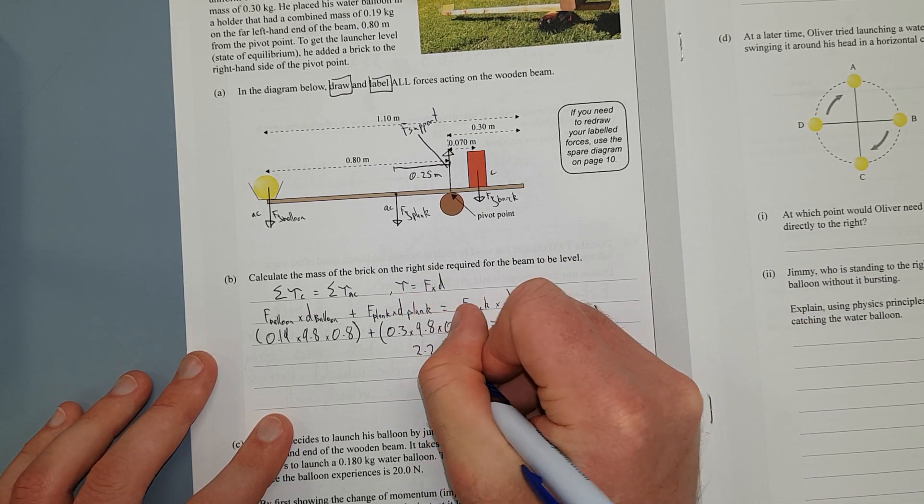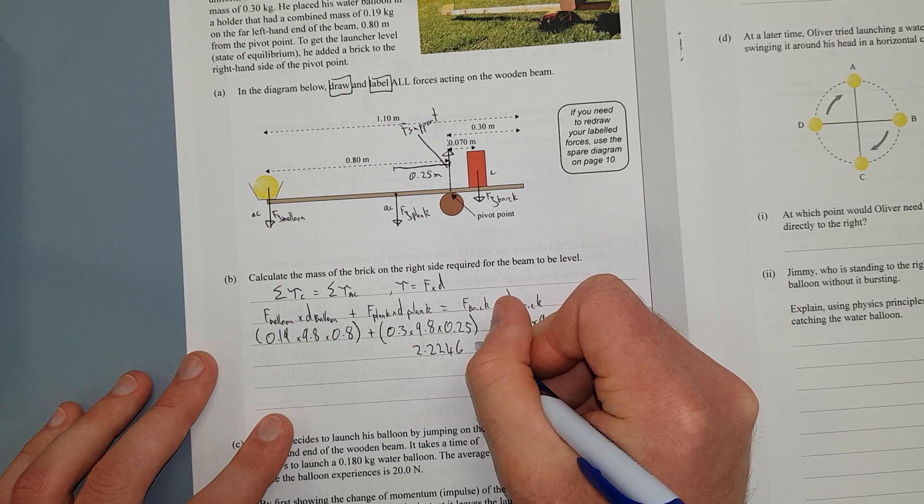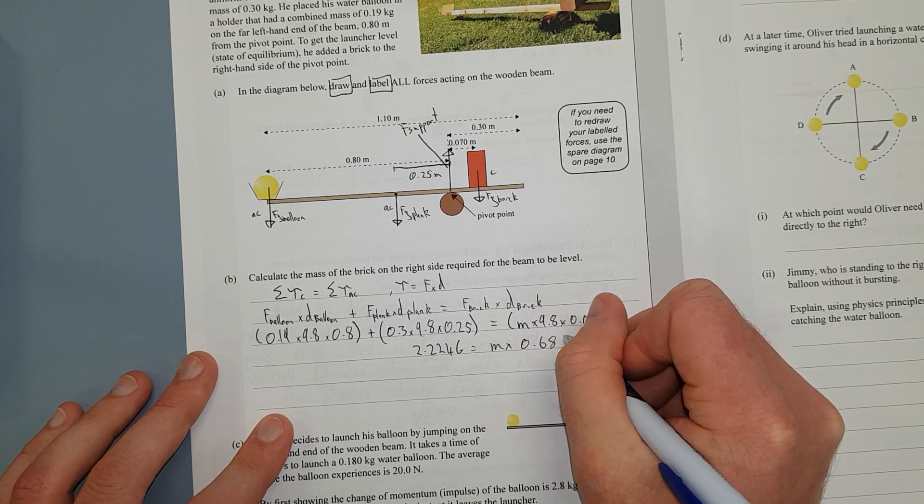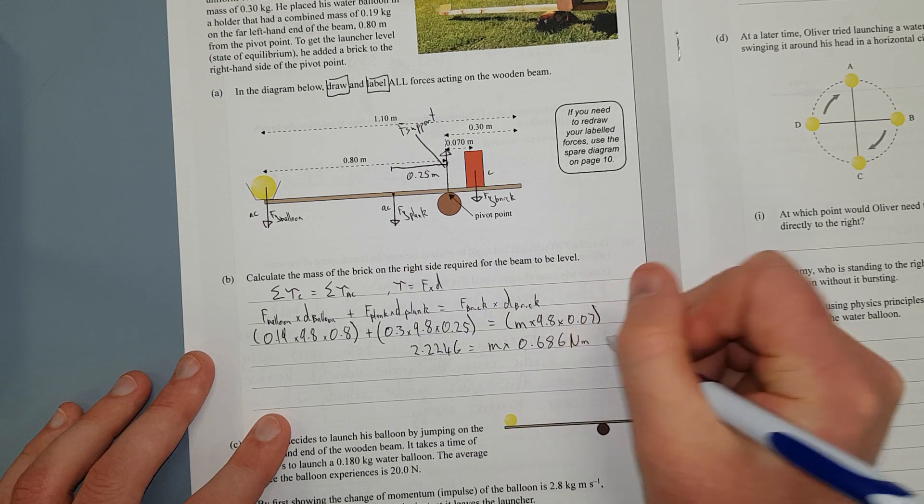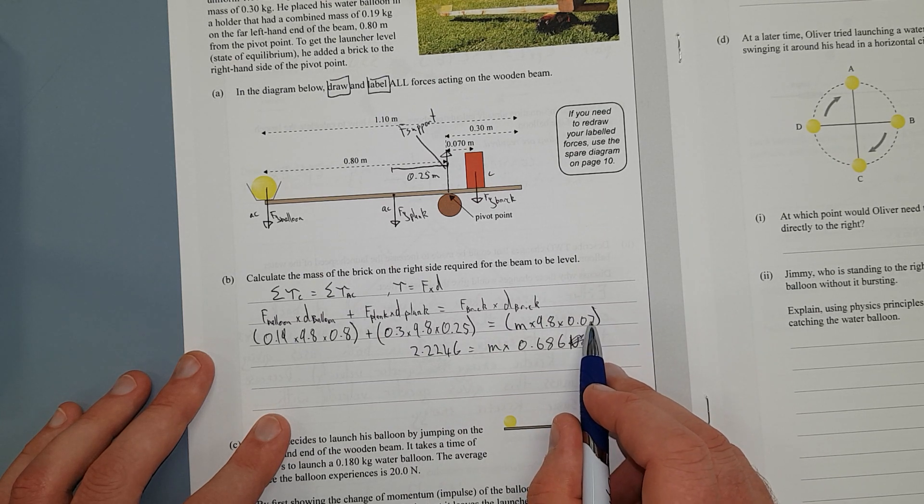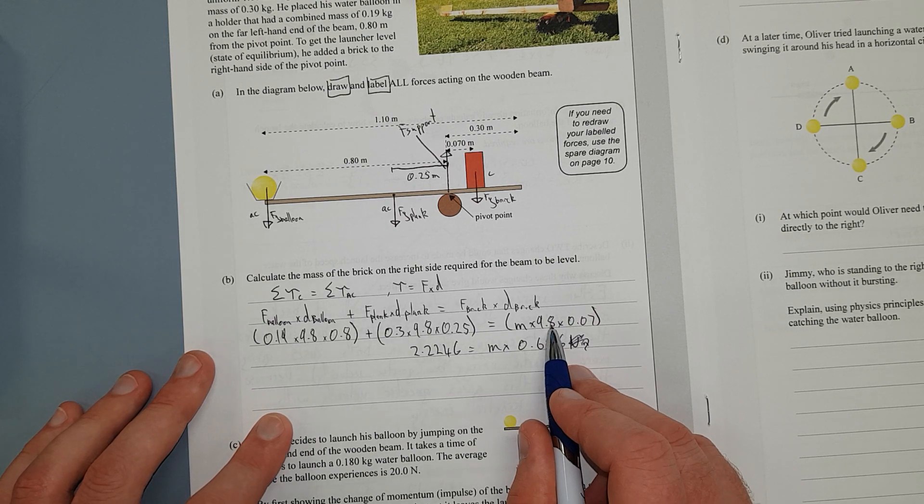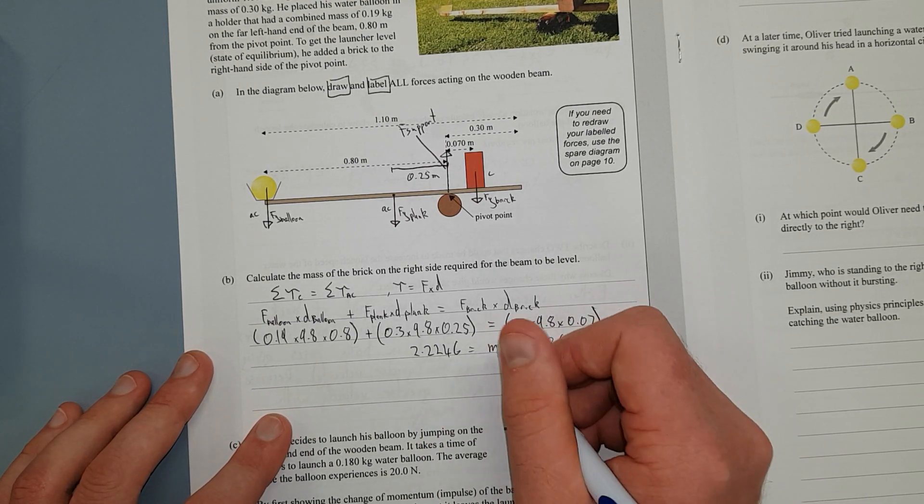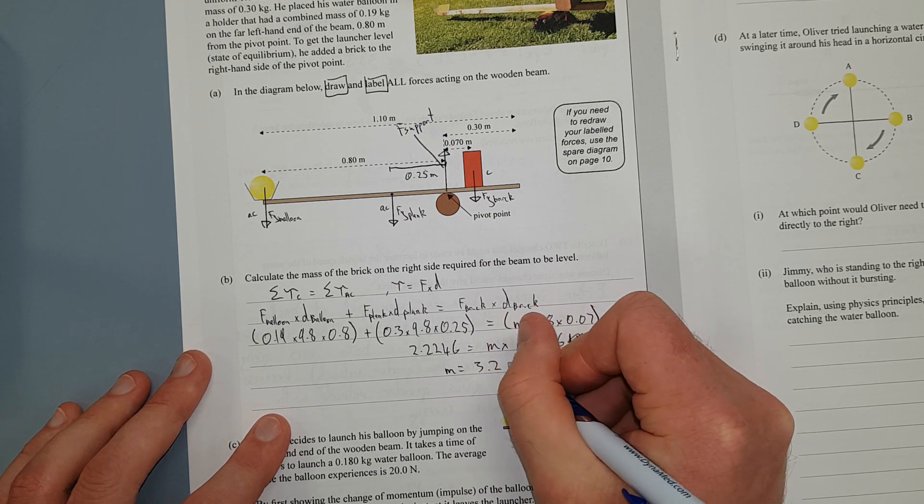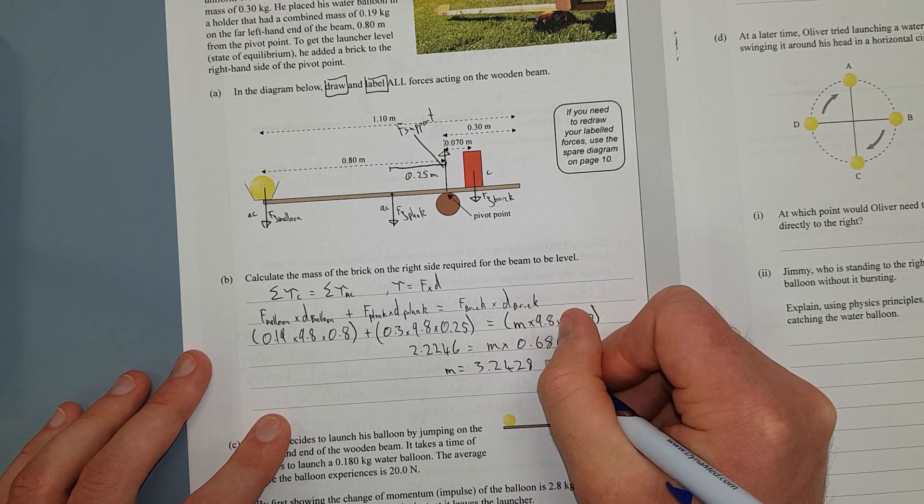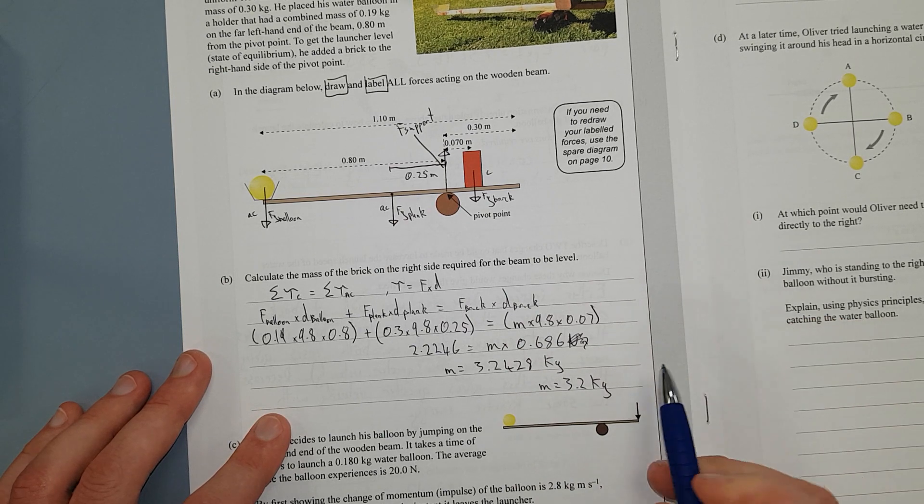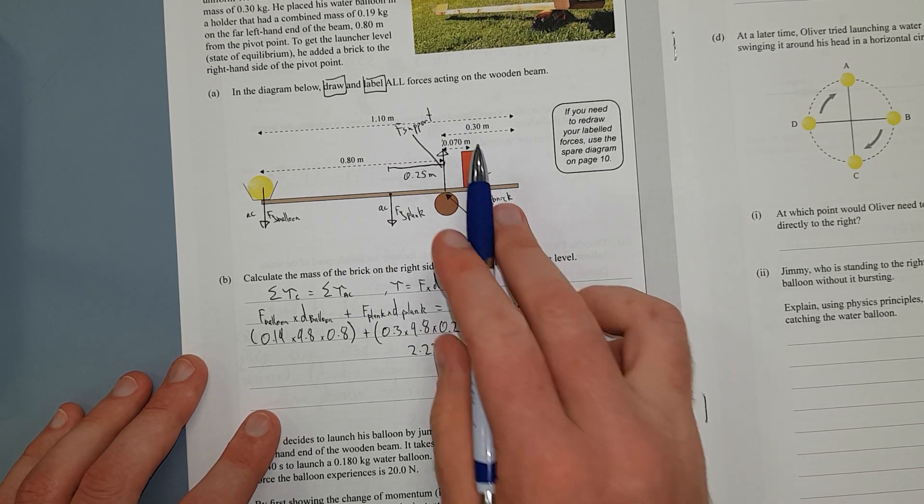Is going to be equal to the mass of the brick, which we're trying to find out, times 9.8 times 0.07, because it's 7 centimeters from there to there. Right, and that is equal to 2.2246, by the time you calculate that, equal M times 0.686. And this is Newton—that's Newton meters by the way. This here is Newton meters, this is a distance times an acceleration, I don't even know what that is, but that's Newton meters. Right, mass is going to be equal to, you just get this divided by that, 3.2428, I'm leaving it unrounded, kg.